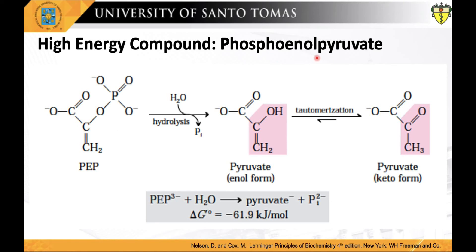Probably the highest energy-requiring compound is phosphoenolpyruvate, or PEP. PEP contains a phosphate-ester bond that undergoes hydrolysis to yield the enol form of pyruvate, which can immediately tautomerize to the more stable keto form of pyruvate. Because the reactant, phosphoenolpyruvate, has only one form — the enol form — and the product, pyruvate, has two possible forms, the product is stabilized relative to the reactant. This is the greatest contributing factor to the high standard free energy of hydrolysis of phosphoenolpyruvate, having a standard free energy change of almost twice that of ATP, at negative 14.8 kilocalories per mole, or negative 61.9 kilojoules per mole.